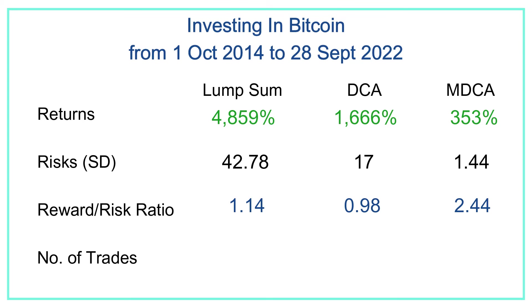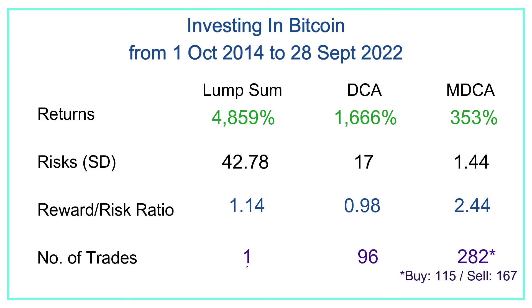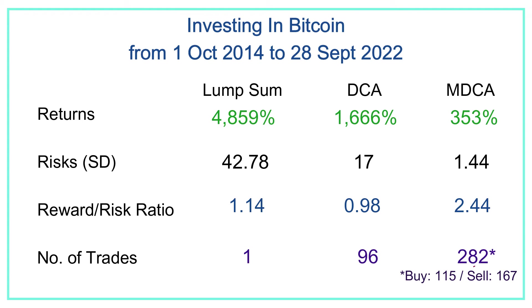Let's have a look at the number of trades involved with each strategy, because that makes a difference in terms of effort as well as trading costs. With lump sum investment, you only need to make one trade at the start of the period and just wait — that's the least amount of maintenance and trading costs. With Time-Based DCA, you make one buy trade each month, so over eight years you will have made 96 trades. With Movement-Based DCA, you have the highest number of trades: 282 trades in total, with 115 buy trades and 167 sell trades.